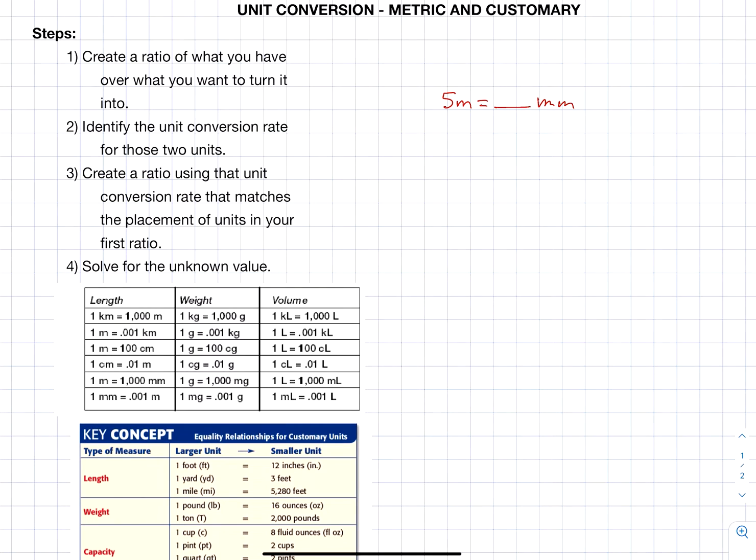Step number one, create a ratio of what you have over what you want to turn it into. So I have 5 meters and put that over an unknown amount of millimeters. And I'm going to put X millimeters to make that make sense. Then I put an equal sign right here. And that says identify, step two, identify the unit conversion rate for those two units. I'm going to look at this little table right here. Ideally, you know this stuff and you can memorize it.